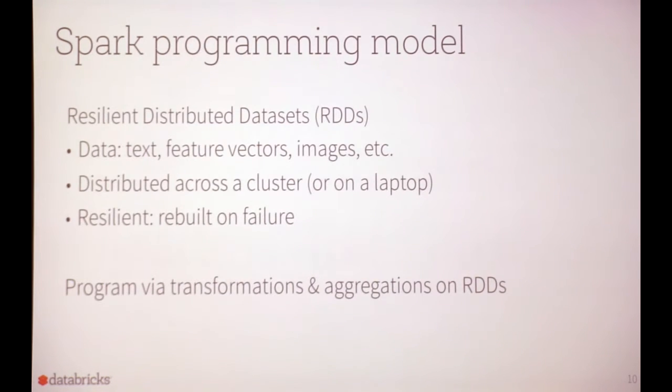The general programming model for Spark was originally based on RDDs, or Resilient Distributed Datasets. The data can be pretty much anything — text, feature vectors, images, and so on. These are distributed across a cluster, although they can also be simulated on a laptop. Most importantly, as you scale up, they're resilient — they're rebuilt upon failure. If one of your worker nodes in the cluster dies or stops communicating, the data which was lost can be reconstructed efficiently. The idea behind Spark is to program via transformations and aggregations on RDDs.